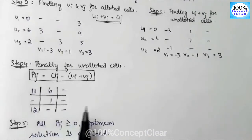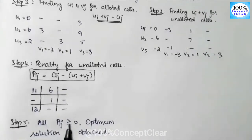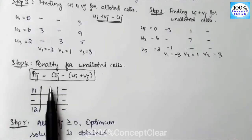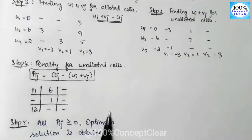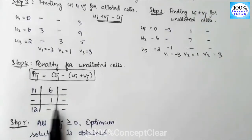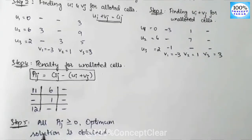Now we check the optimum solution condition: all Pij values should be greater than or equal to 0. Our penalty values are 11, 6, 1 and 12 — all are greater than or equal to 0. Therefore, the optimum solution is reached.